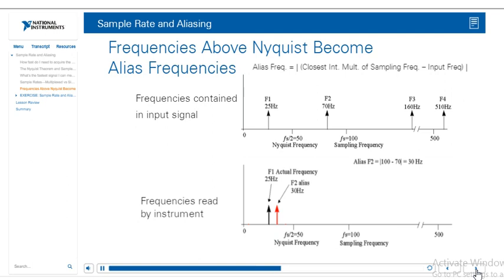Now, let's repeat the procedure for the remaining two components of our signal. The closest integer multiple of the sampling frequency to 160 Hz is 200 Hz. So, the formula looks like this: 200 minus 160 equals 40 Hz. Therefore, the 160 Hz component of our signal will show up as 40 Hz.